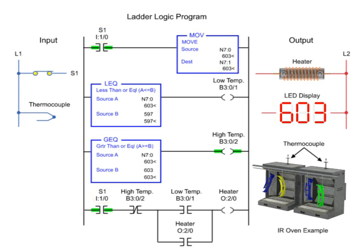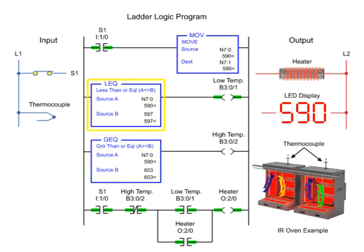Using the less-than-or-equal-to and greater-than-or-equal-to instructions addressed to the same integer file, the source values of A and B are compared to control the heater. With source A less than source B of the less-than-or-equal-to instruction, the low temp and heater outputs are enabled.